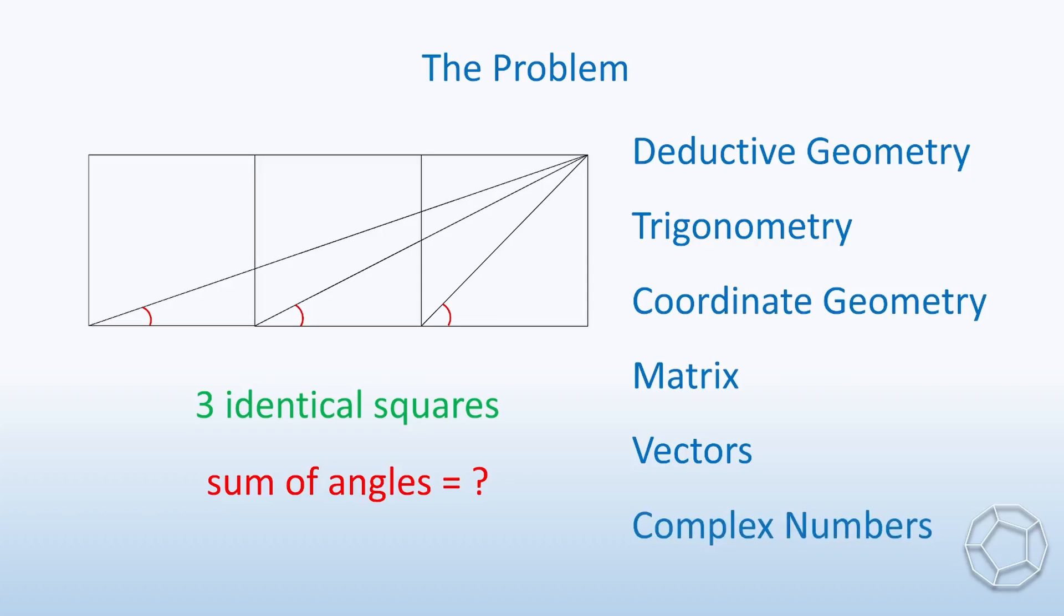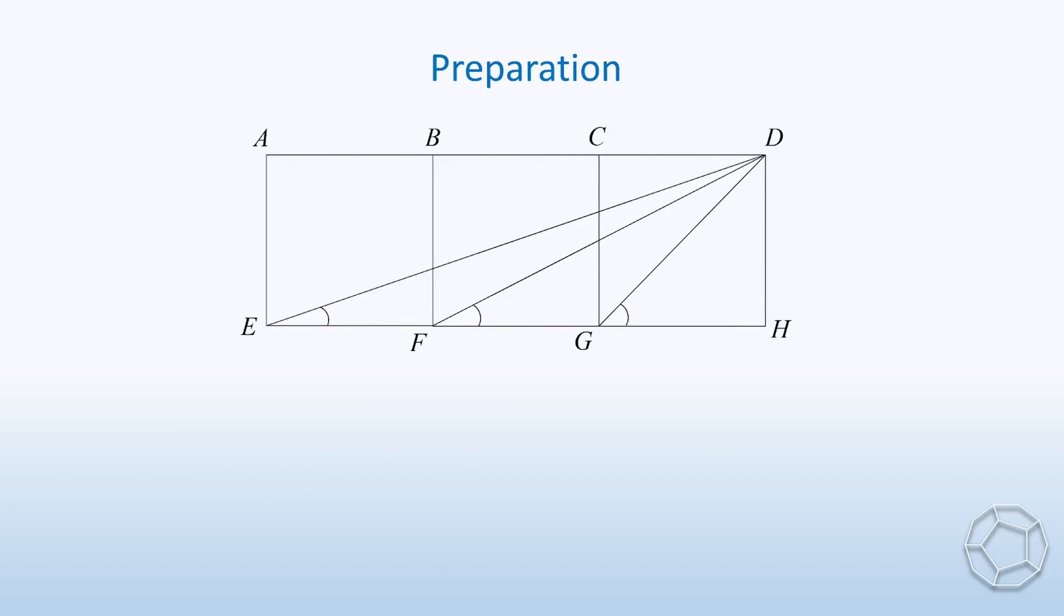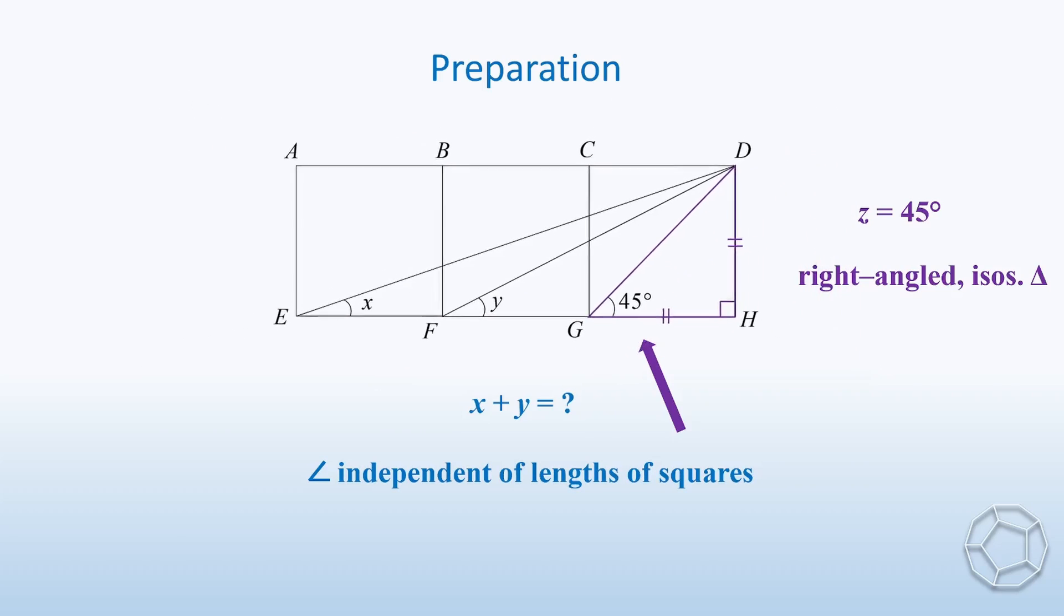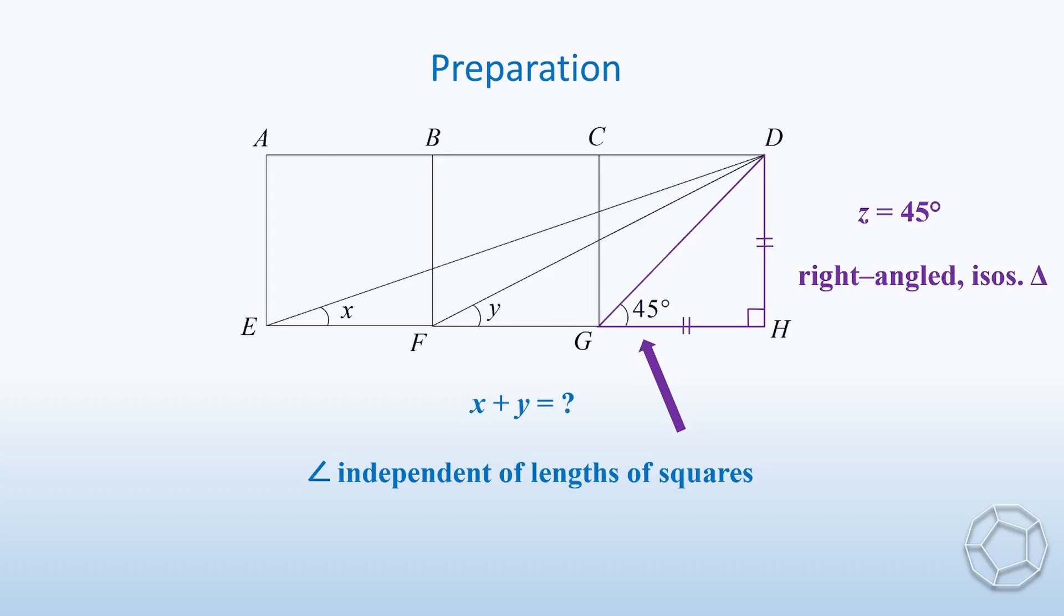We shall do some preparation before looking at each method one by one. First of all, we label the vertices as A to H. We also name the angles as x, y, and z. It is obvious that z is equal to 45 degrees, because it is in a right-angled isosceles triangle. So we only have to figure out the sum of x and y. Indeed, the sizes of the angles are not affected by the length of the squares. It is because we can scale it up and scale it down freely. So to make it simple, we take the side length of the squares to be one.